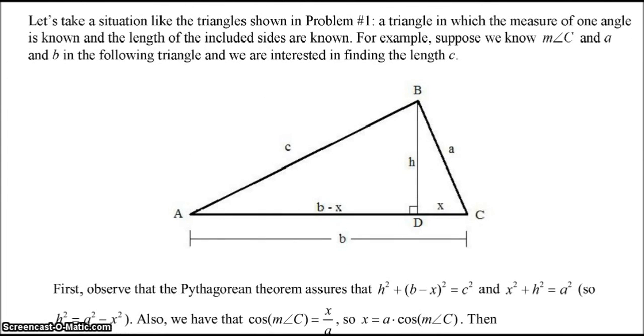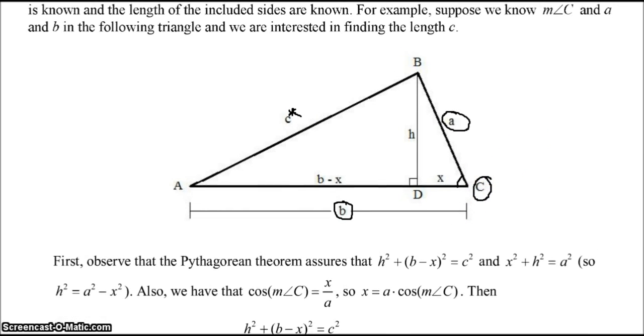Let's take a situation like the triangle shown in problem 1, a triangle in which the measure of one angle is known and the length of the included sides are known. For example, suppose we know the measure of angle C and A and B in the following triangle, and we are interested in finding out the length of C. So again, this is what we know: the angle C, length of A, length of B.